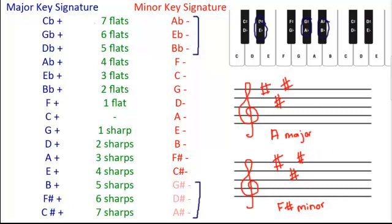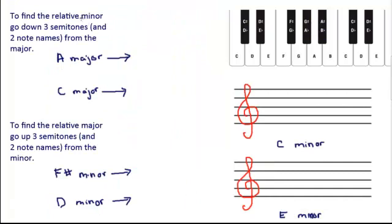Let's look at how to figure out relative major and minors. To figure out the relative minor, we take the major key and go down three semitones and two note names. So if we want the relative minor of A major, we start on A and go down three semitones — and the two note names is important — and we end up on F-sharp minor, not G-flat, because of the two note names. So F-sharp minor is the relative minor of A major, and they both have the same three sharps.